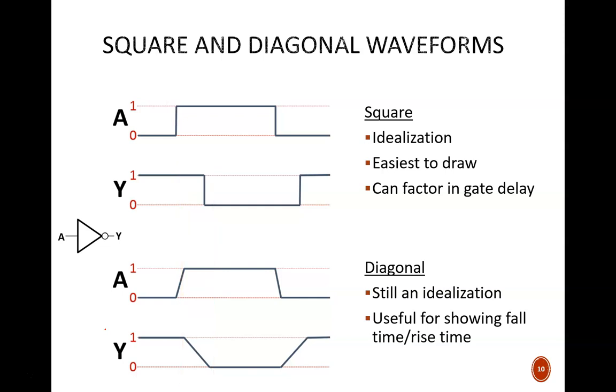There is always a distinction between model and reality. These models, whether square or diagonal waveforms, can represent some key features of the true behavior, and maybe those are the only features we care about. But they will never be complete representations. The next time you see a square waveform, keep in mind that it is a simplification.